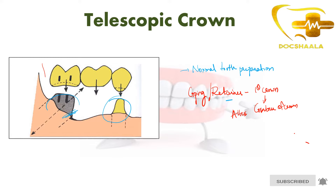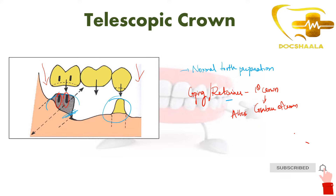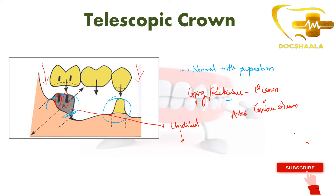This crown is prepared with vertical slots — you can appreciate the vertical slots over here — and the surface of the crown is left unpolished. It is left unpolished because this facilitates cementation, which will help in seating the telescopic crown properly onto the abutments.